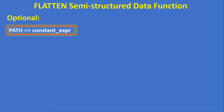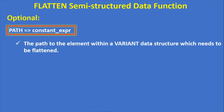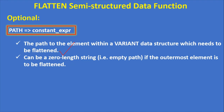The path parameter is optional — it is a constant expression specifying the path to the element within a variant data structure which needs to be flattened. Based on your JSON document, you can specify one of the values as a constant path. It can be a zero-length string, meaning if you want to flatten the outermost element you don't need to specify a path. The default is zero-length, i.e., the empty path — if you don't provide it, Snowflake will consider zero-length string.